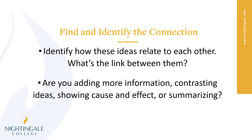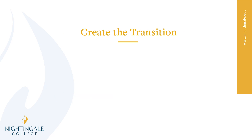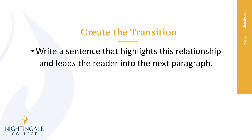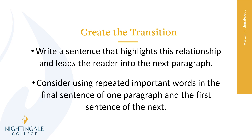Consider how those ideas are related and how they link together. Are you adding more information? Are you contrasting ideas? Are you showing cause and effect? Are you summarizing or concluding? Identifying this is going to help you move forward and alleviate some of the stress of writing transition sentences. The next step is to create the transition — write a sentence that highlights this relationship and leads the reader into the next paragraph. Consider using repeated important words in the final sentence of one paragraph and in the first sentence of the next. For example, if it's about nursing and self-care, mentioning self-care at the end of one paragraph and again at the start of the next links those two ideas.